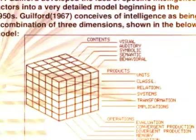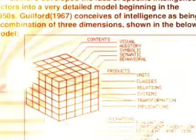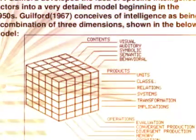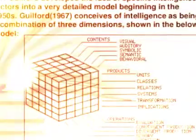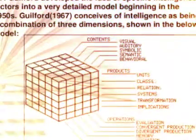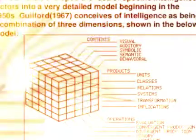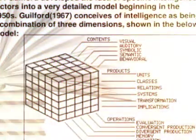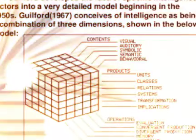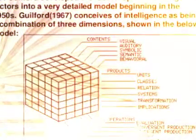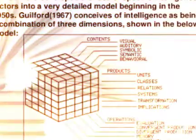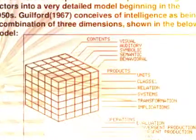He classified content into four categories: figural, symbolic, semantic, and behavior. Later on he divided figure content into two parts, first as visual figure and second as auditory figure. That added one more category in content. Thus, the total number of categories in the content became 5 in place of 4. They can be defined as visual content, which can be seen by the eyes, and auditory content, which can be heard by the ears.